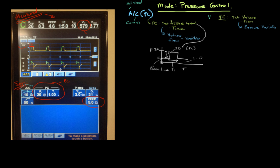Let's calculate the I:E ratio. In pressure control this is easy because we have a set inspiratory time of one second. Our total cycle time is six seconds — so every six seconds we get a breath. One second is inspiration, which means five seconds is exhalation. Our I:E ratio is therefore 1:5, and you can see that confirmed on the ventilator screen.